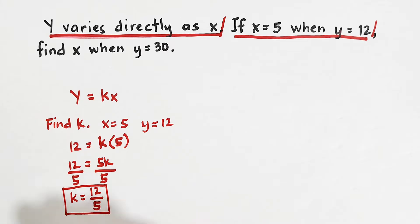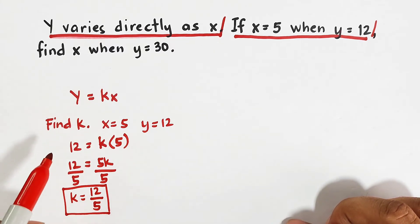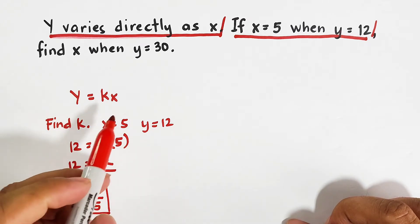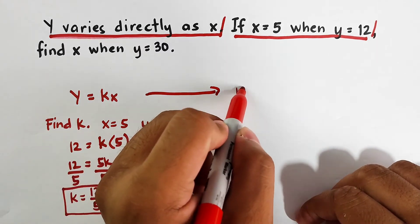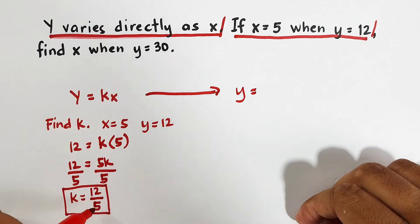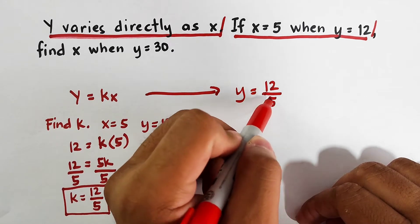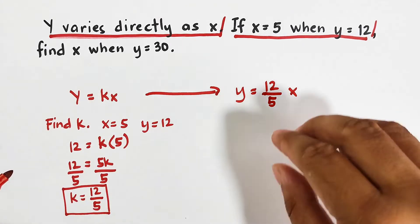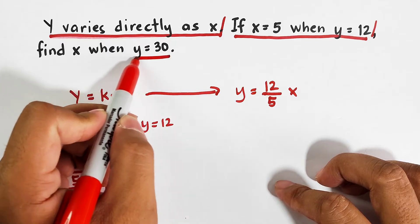Now, since we have the constant of the variation, again, first step is to create a general equation. Second step is to find k, and then eventually, we will use this k to create a new equation. So it goes like this. It will become y is equal to, replace k by 12 over 5, and then x. Since we already have this working equation, we can now proceed and solve the main problem.